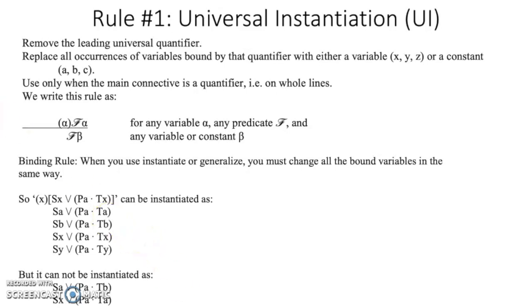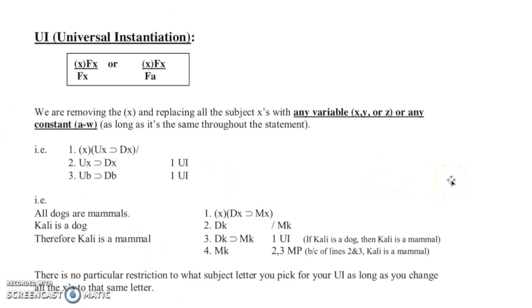And here's just another way of looking at this. So we were removing the X and replacing all the subjects X with any variable or any constant, as long as it's the same throughout the statement. And that makes sense because we're doing a universal, so we're saying all of this is this, so we can't have them mixed up. So here you can do an X, totally acceptable. You're doing a variable, that's a universal, you're keeping it universal, not a problem. And here we're having a universal statement and we're going down to a constant, which makes sense because you have a universal, you're saying all of this in this universe belongs to this, so we can choose one of those out of there and we can create a constant out of that.